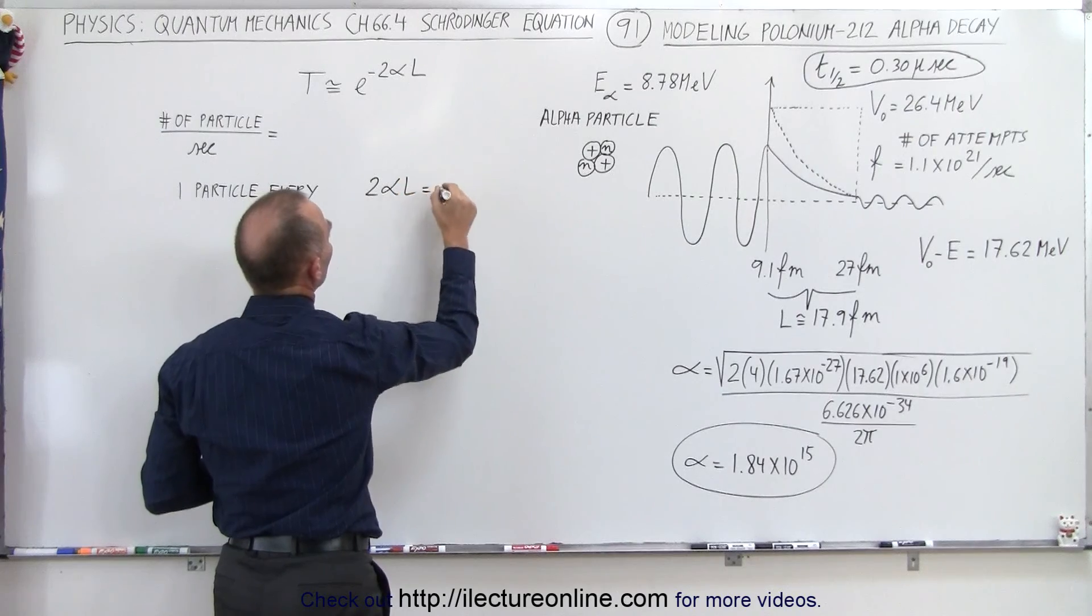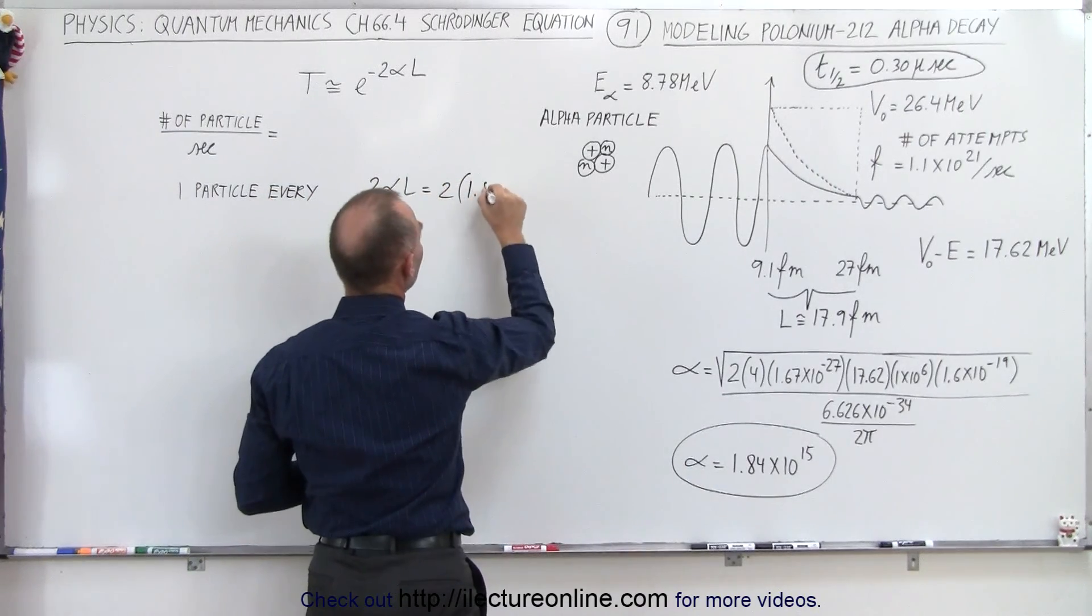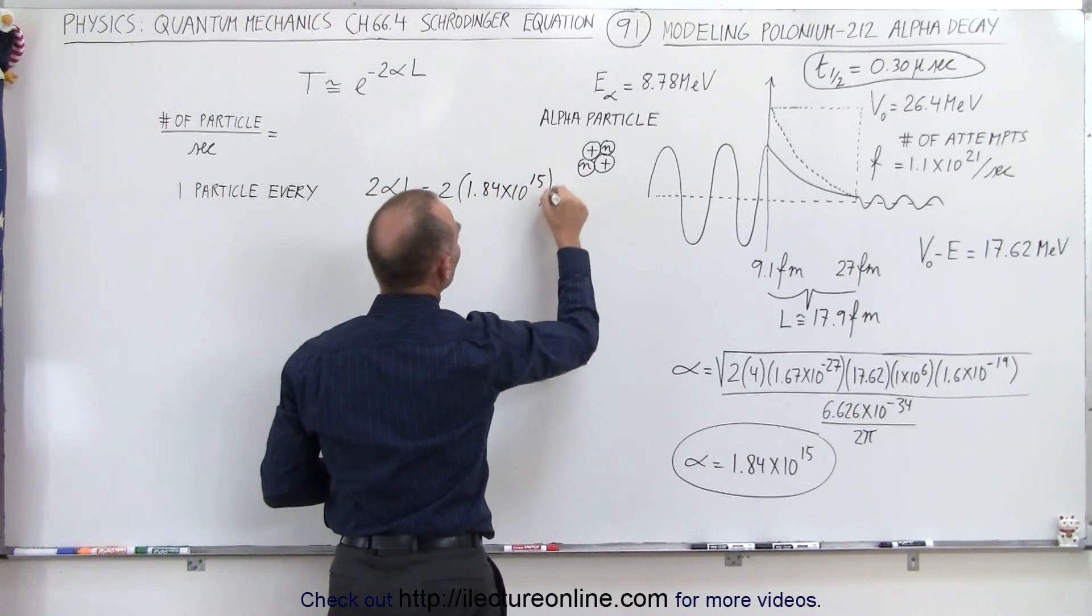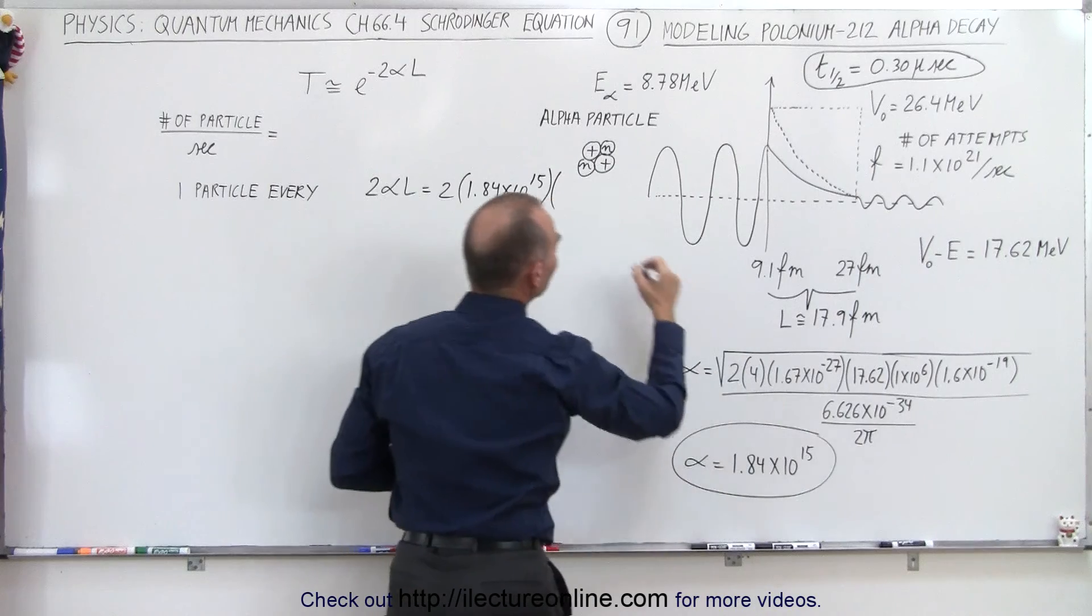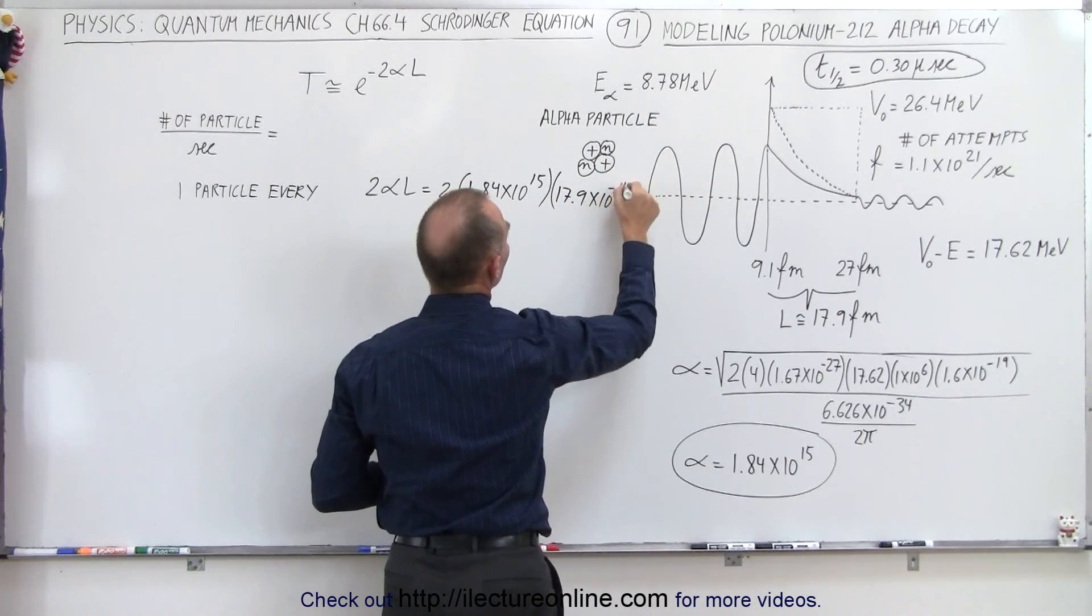So 2αL is going to be equal to 2 times alpha, which is 1.84 × 10^15, and then the distance is going to be 17.9 femtometers, 17.9 × 10^-15 meters, and so that's the 2αL value.